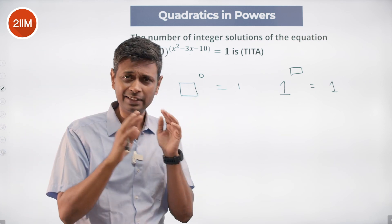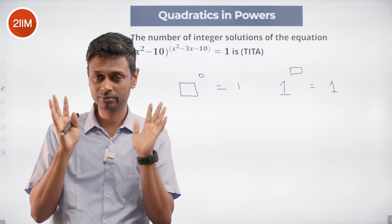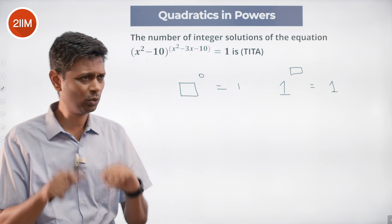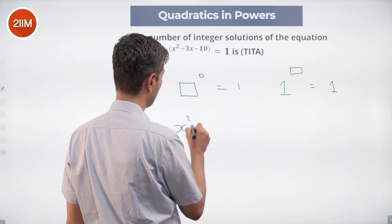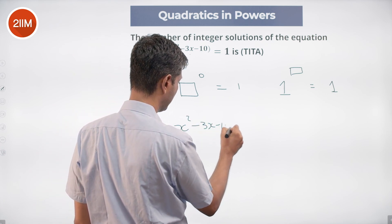So what I'm going to do: I'm going to solve two different equations. I'm going to say x² - 3x - 10 = 0, get the answers. Then find x² - 10 = 1, and get the answers.